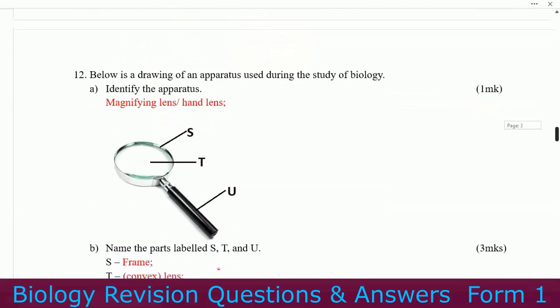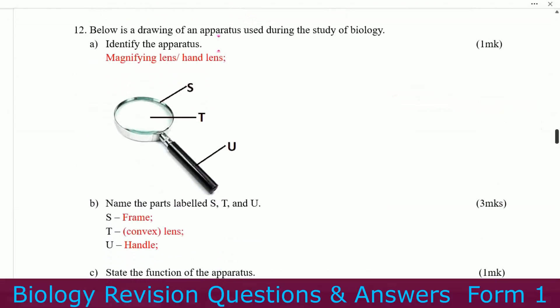Number twelve: below is a drawing of an apparatus used during the study of biology — identify the apparatus. You can see it has parts S, T, and U. This one is a magnifying lens or hand lens. Name the parts labeled S, T, and U. S is the frame, T is the convex lens, U is the handle.